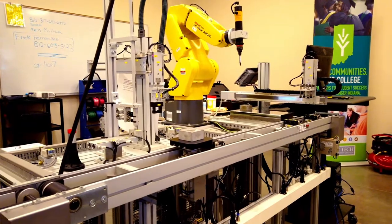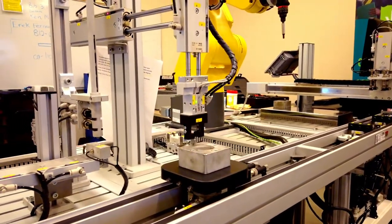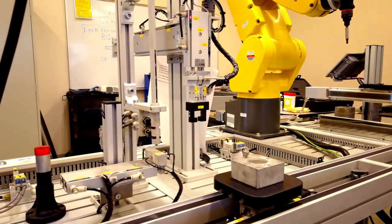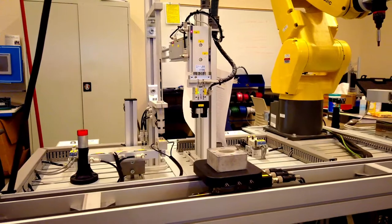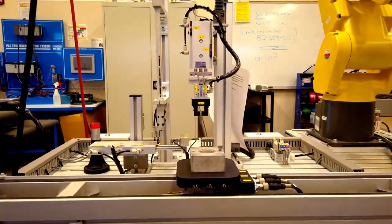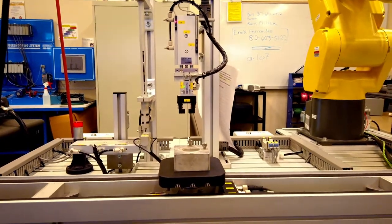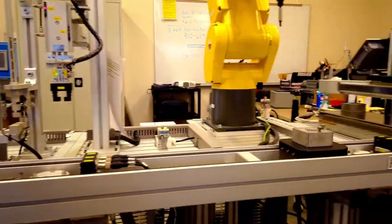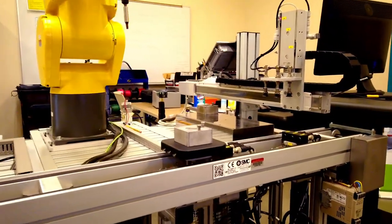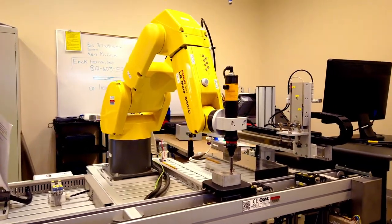This is one of our mechatronics troubleshooting trainers. It simulates an assembly line process. This station here feeds a screw down, drops it into this, it will come over, this part will pick the screw up and actually place it in the part, and then feed it down the line to the robot so the robot can tighten it. This allows us to teach our students to troubleshoot an assembly line atmosphere.